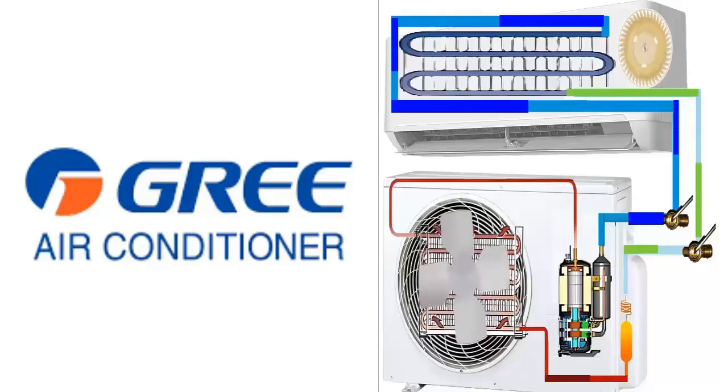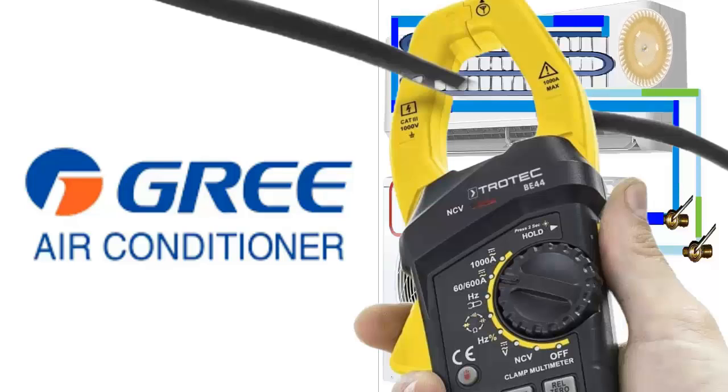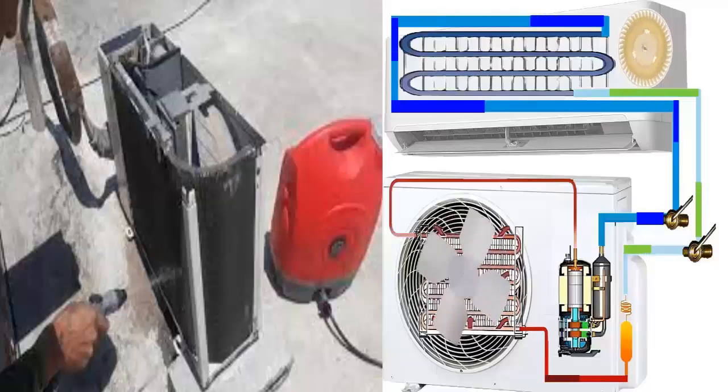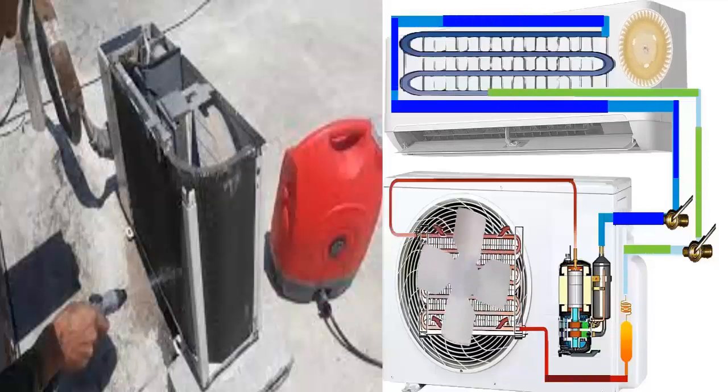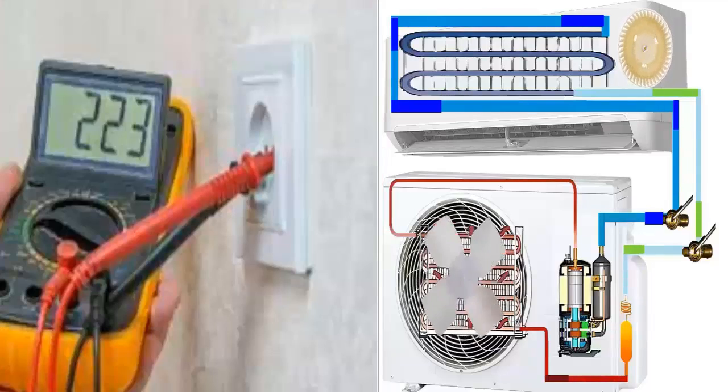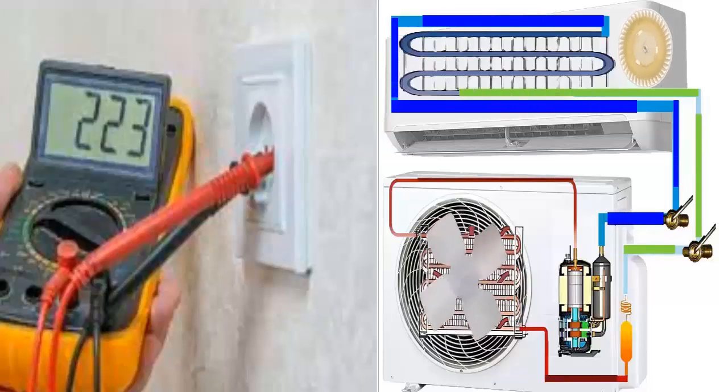2. For compressor overcurrent issues, make sure to clean the heat exchangers of the indoor and outdoor units. Verify the proper rotation of the fans, check that the equipment is receiving the correct voltage, and inspect all compressor connections.